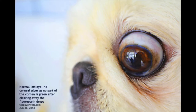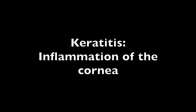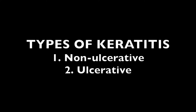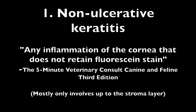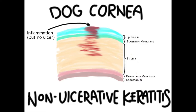Here we can see a normal dog's cornea — it is continuous and clear. Keratitis is the inflammation of any part of the cornea. There are two main types of keratitis: non-ulcerative and ulcerative. Non-ulcerative keratitis is any inflammation of the cornea that does not retain fluorescent stain. Most non-ulcerative keratitis only involves up to the stroma layer, and the corneal structure is not disrupted.